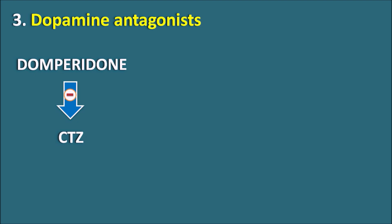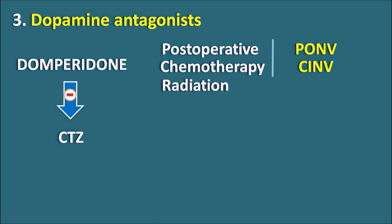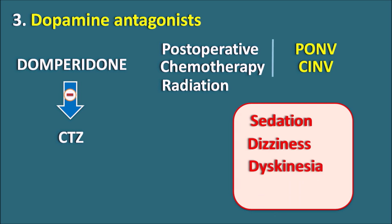Because dopamine antagonists mainly act on the CTZ, they can be used to control post-operative nausea and vomiting (PONV) as well as chemotherapy-induced nausea and vomiting (CINV). Sometimes nausea and vomiting produced by radiation therapy is also controlled by dopamine antagonists. Since these drugs block dopamine receptors and many can enter the CNS, they produce side effects such as sedation, dizziness, and extrapyramidal side effects similar to antipsychotics — including dyskinesia (disturbance in kinetic movements) and dystonias (disturbance in muscle contraction).